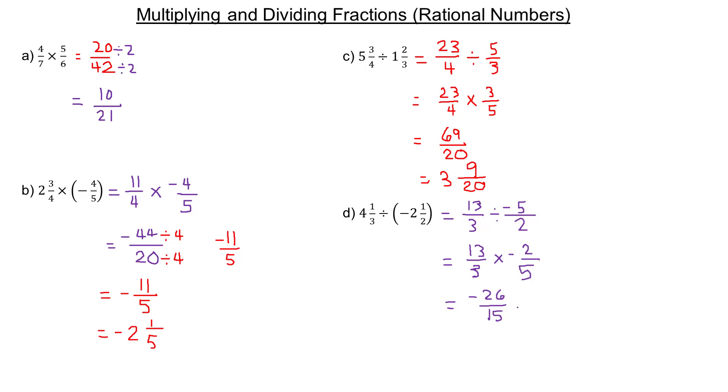If you're asked to change it to a mixed number, how many times does 15 go into 26? Counting by 15s: 15, then 30. Since 30 is bigger than 26, it only goes in once. To figure out how many 15ths are left over, subtract 15 from 26, which gives 11. So this is -1 and 11/15.